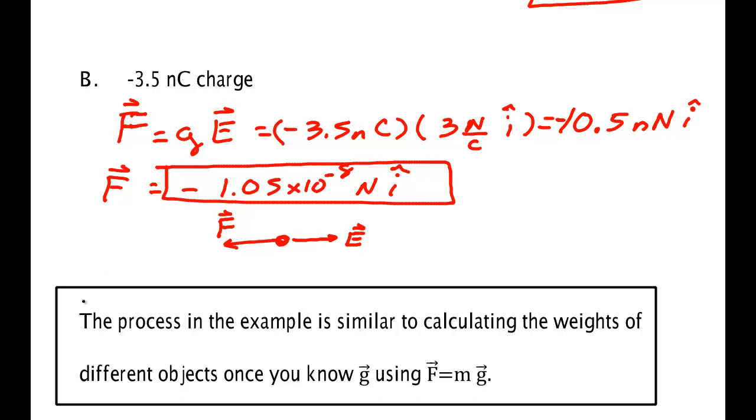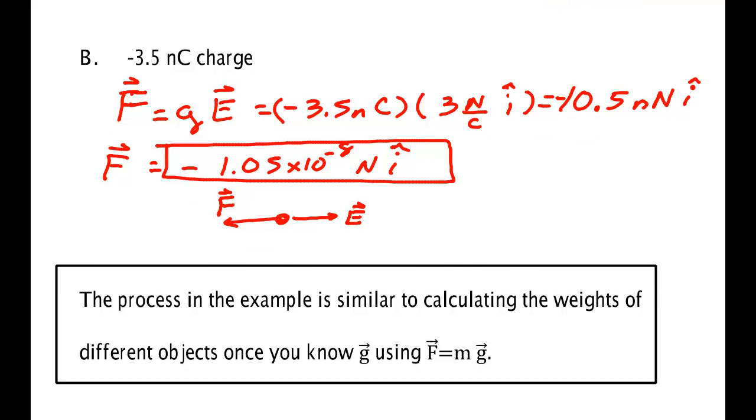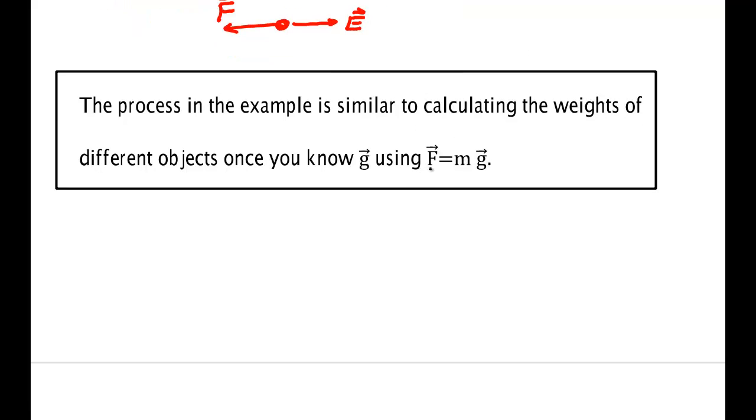Now this process of finding a force by multiplying by a source property, the source property being charge times the field, is not new. We just didn't talk about it previously. We've been doing this for a long time when we were dealing with weight. The weight of an object is equal to its mass, that's the source property, times g, the acceleration due to gravity. So if you happen to have a 2 kilogram object here, then the weight we knew was 2 kilograms times minus 9.8 meters per second squared j hat. But remember this is a newton per kilogram.